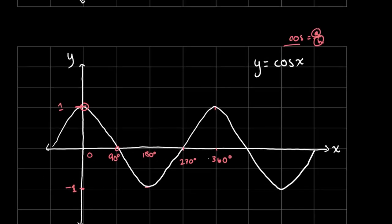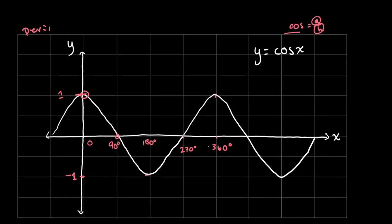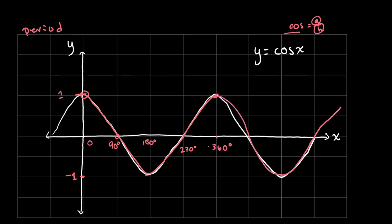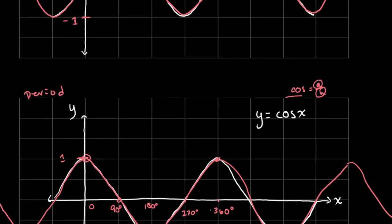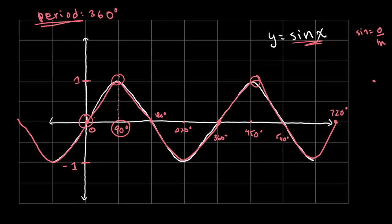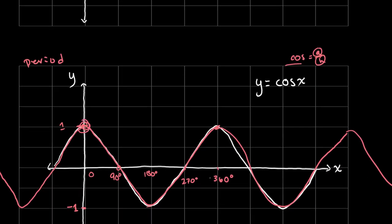The period of cosine of x is also 360 degrees. Starting up at 1, it goes down and comes back — that's 360 degrees, one full loop. Then it does the same exact thing for the next 360 degrees, and continues on both sides. The key difference is that sine starts from 0 while cosine starts from 1, but both have a period of 360 degrees.